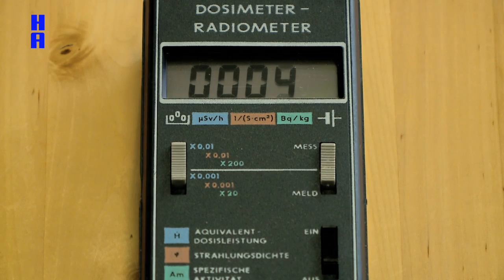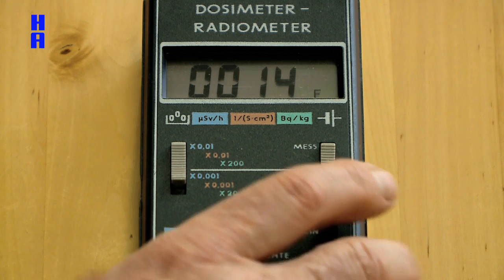The first measurement is an ordinary table which has never been in contact with radioactivity. What we are measuring is the dose rate. This table has a dose rate of 0.14 µSv.